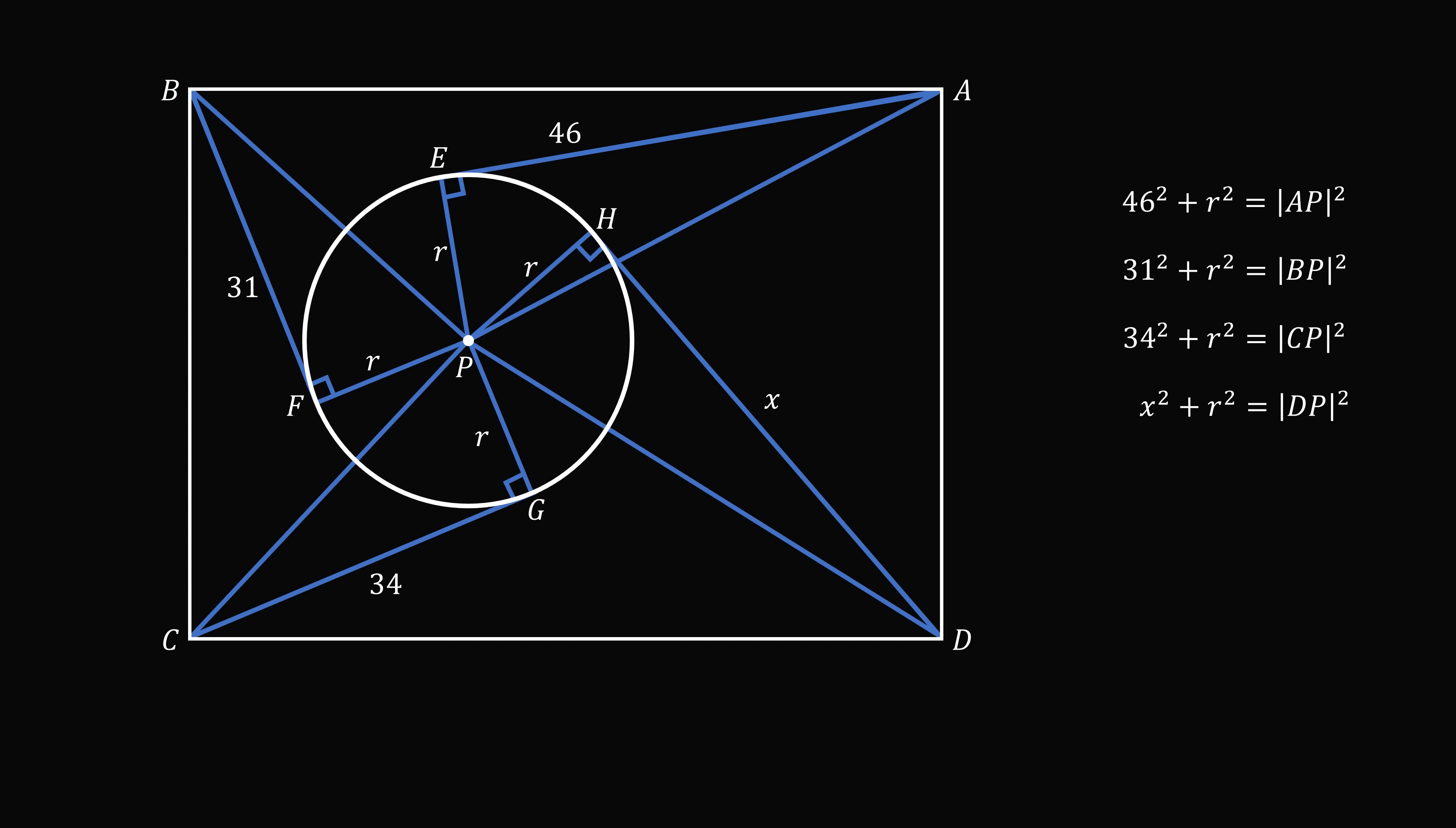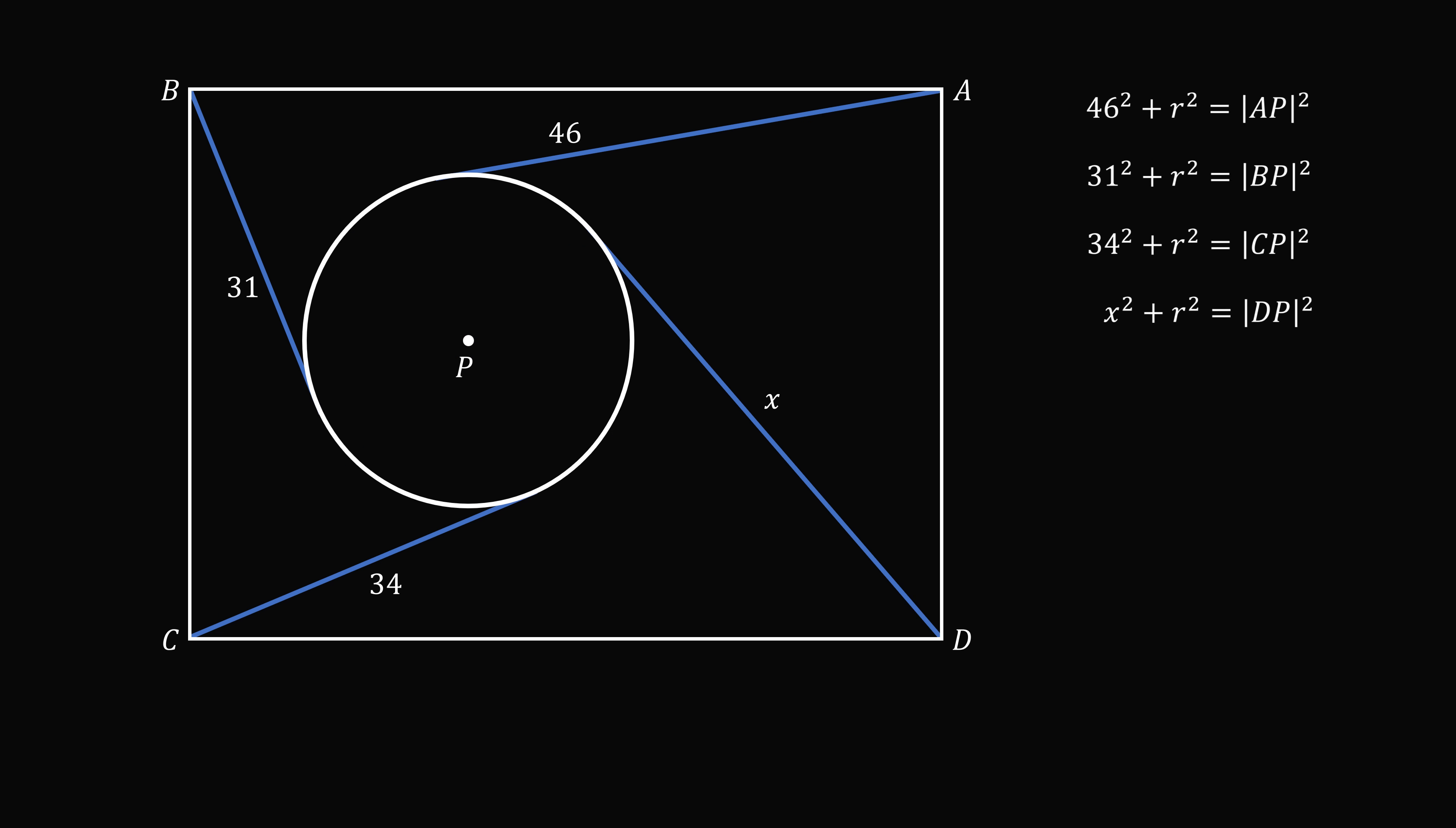So at first it looks like we've just made the problem more complicated. But we notice something, we have a pattern. On the right hand side, we have the square of distances from each corner to the center of the circle. So let's see if we can work out a relationship between the squared distances.